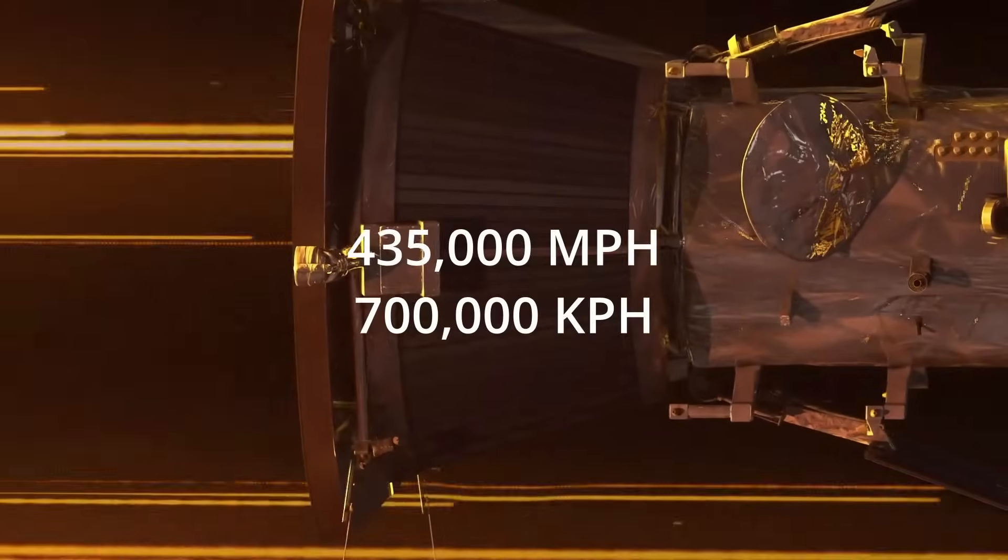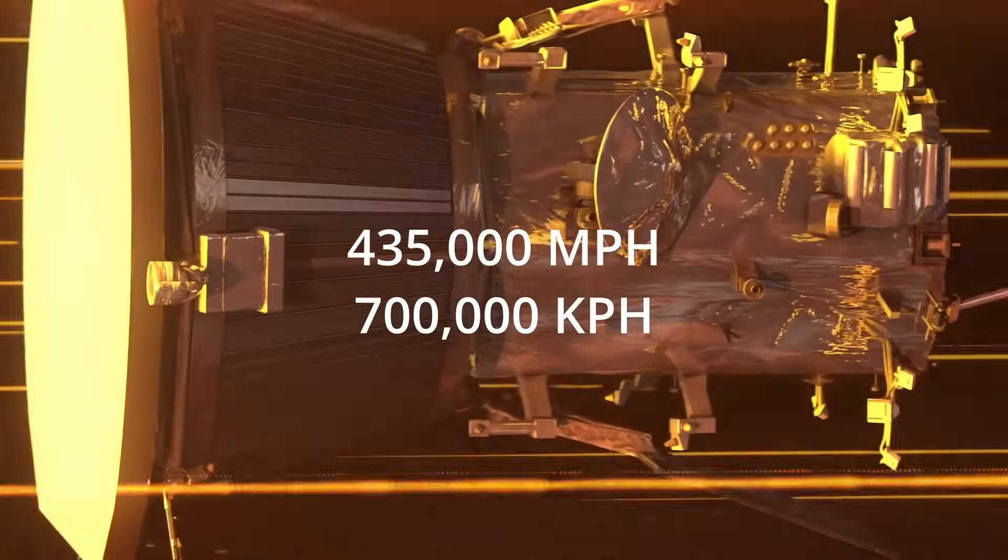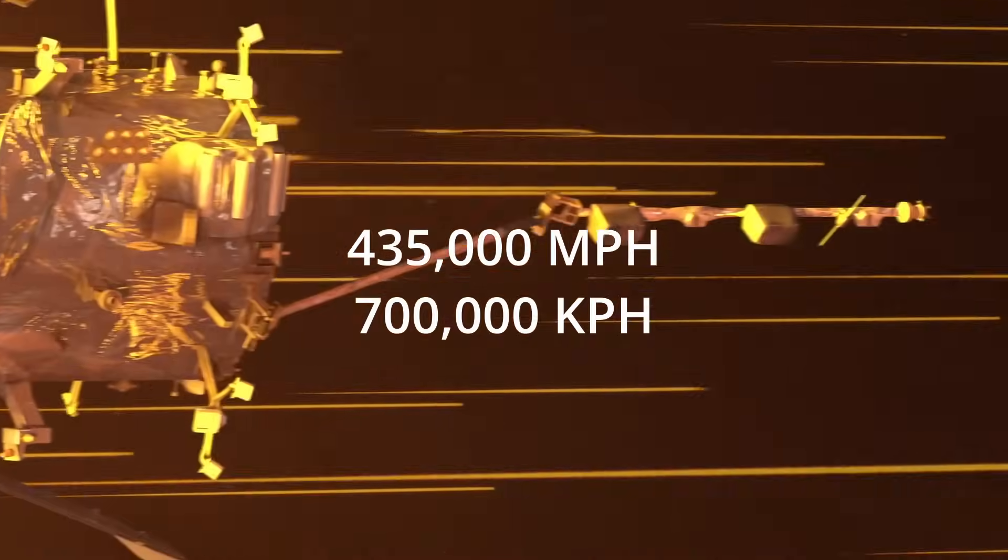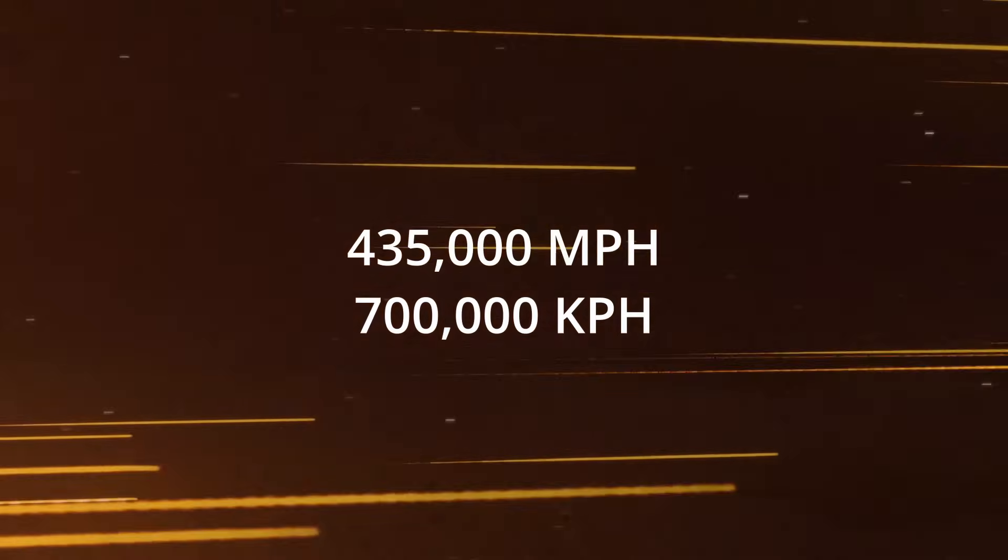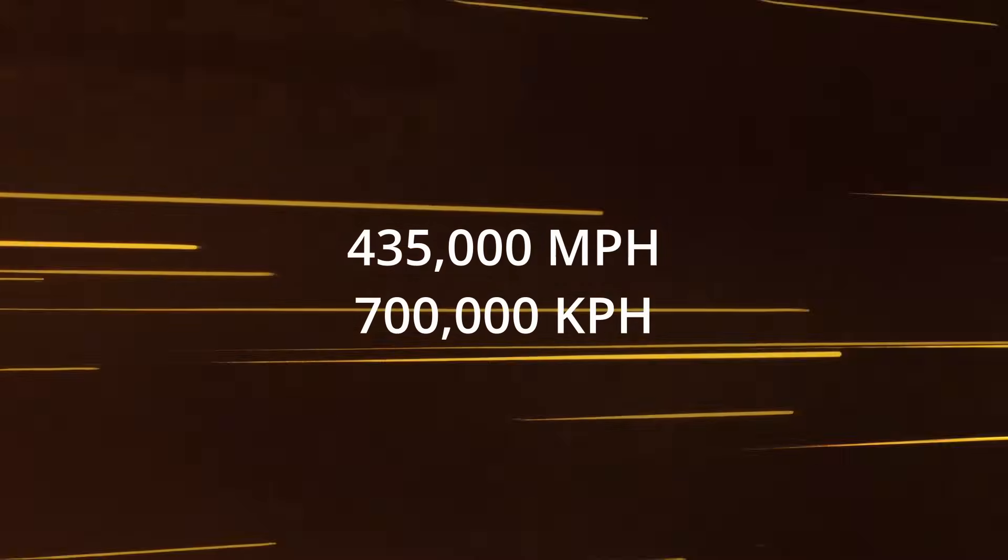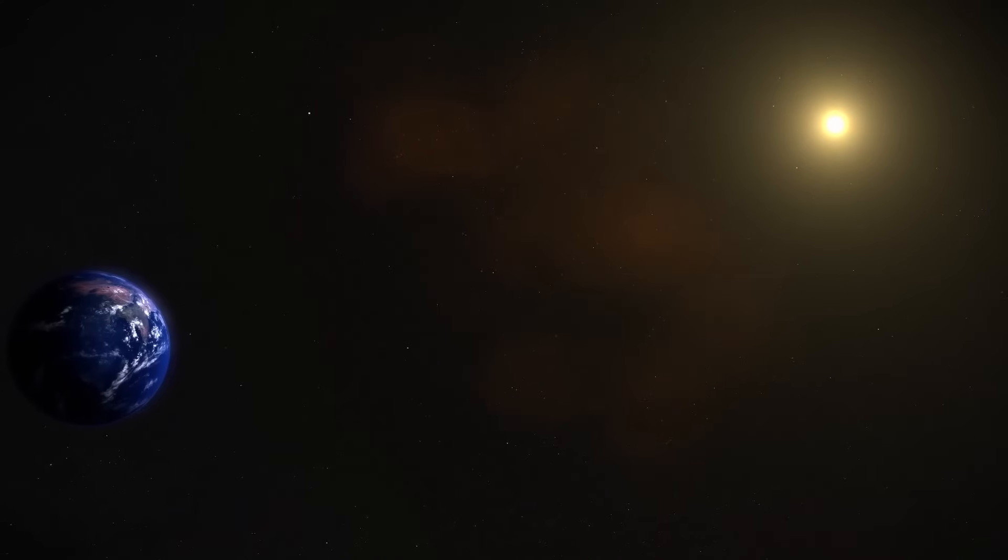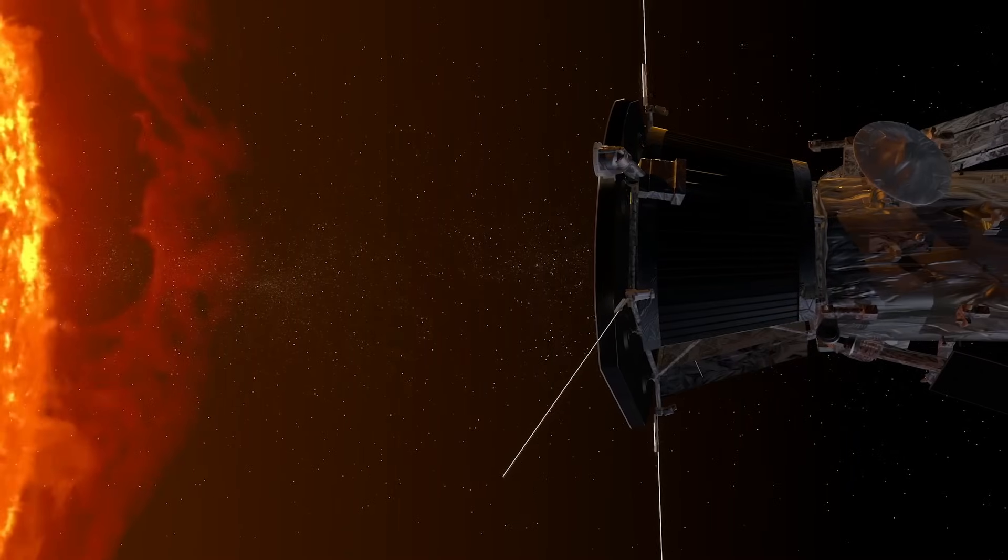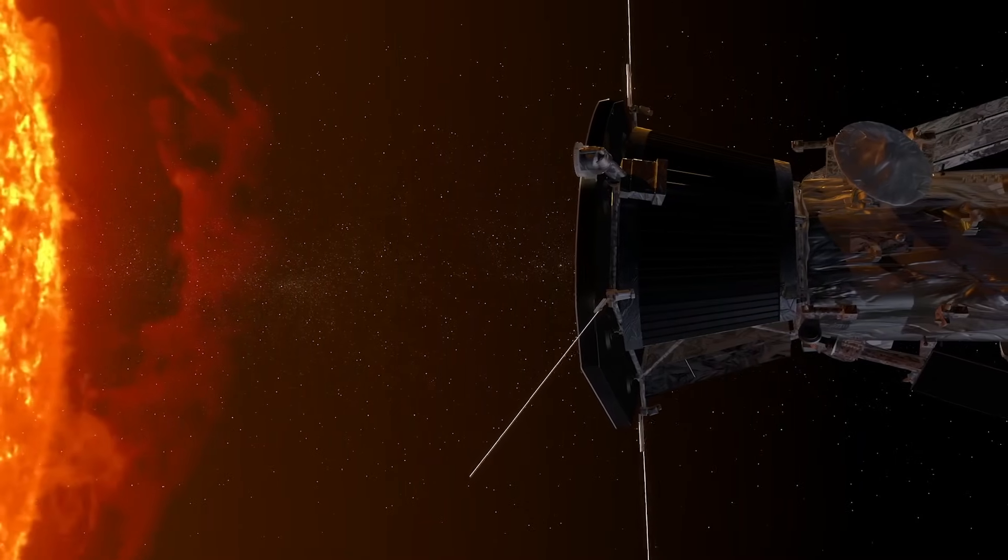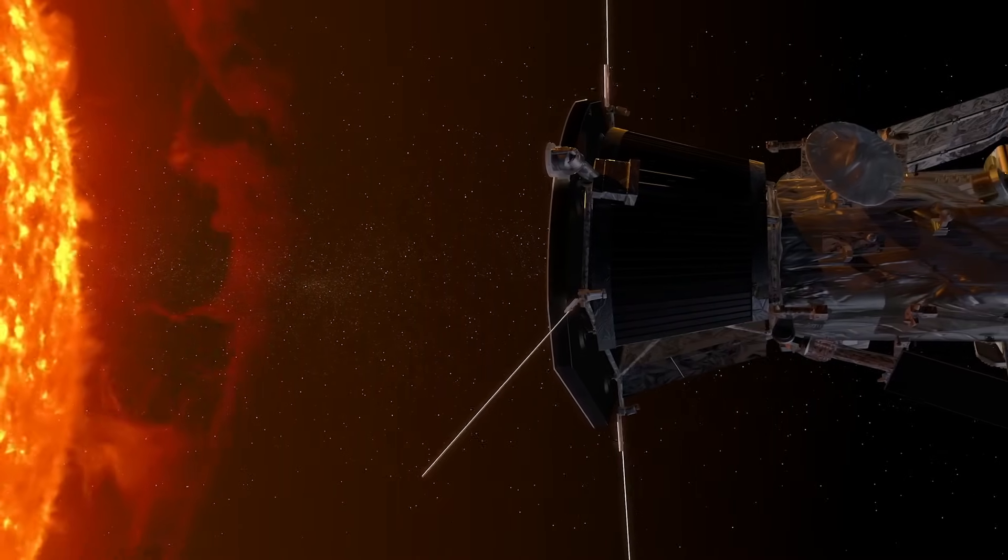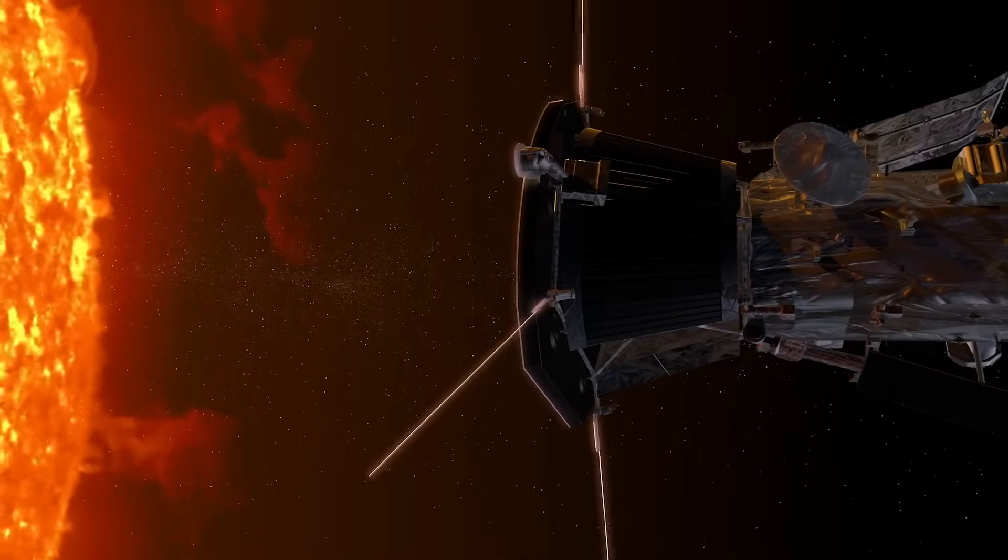On December 24th, NASA's Parker Solar Probe reached a staggering speed of 435,000 miles per hour—that's over 700,000 kilometers per hour—as it continued to study our star's surface and atmosphere. This tiny spacecraft is braving temperatures hotter than molten lava, racing through the sun's atmosphere at record-breaking speeds. What secrets is it uncovering about the star that powers our world?